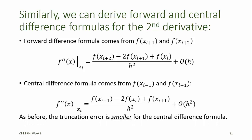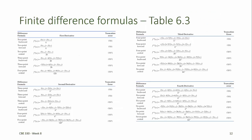Similar to the first derivative estimates, the second derivative estimates using the same number of points are better if we use a central difference formula than a forward or backward difference formula. Finite difference formulas for first through fourth derivatives, using various numbers of points, are summarized in table 6.3 from chapter 6 of the methods text, along with their corresponding truncation errors. In the next video, we'll talk about a different strategy called Richardson's extrapolation that can be used to improve the truncation error.